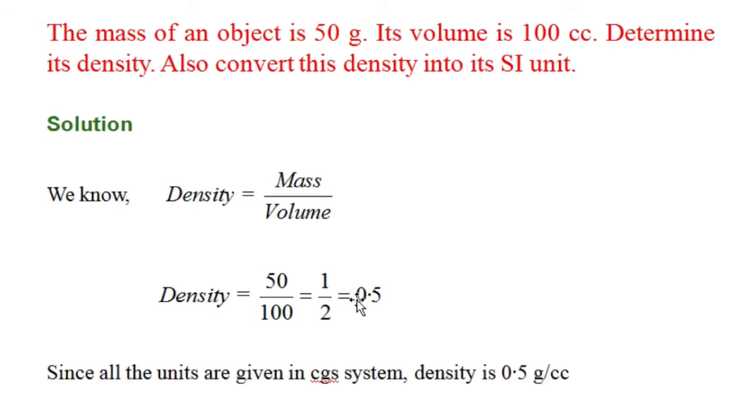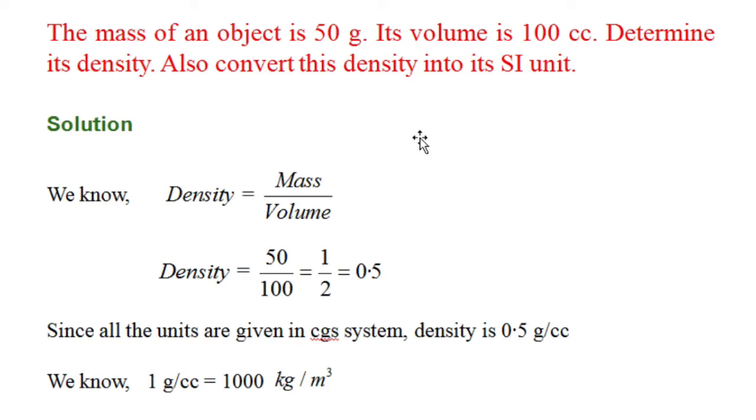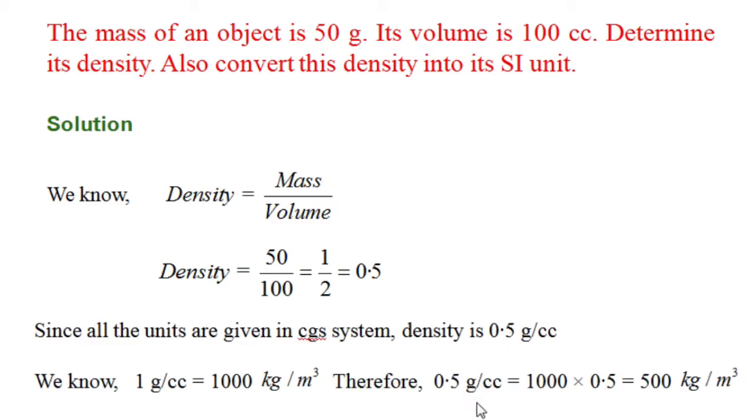Since all the units are given in CGS system, therefore the density is 0.5 gram per cc, but we have to convert it into its SI unit. We know 1 gram per cc is equal to 1000 kg per meter cube. Therefore, 0.5 gram per cc will be equal to 1000 multiplied by 0.5. Density is equal to 500 kg per meter cube.